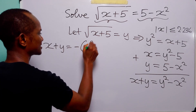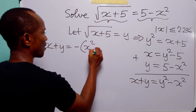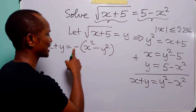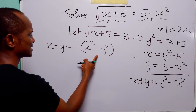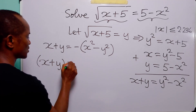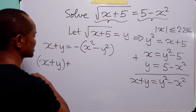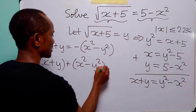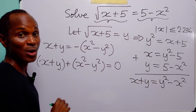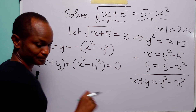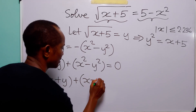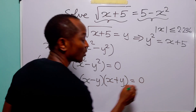We can rewrite this as x + y = -(x² - y²). Bringing the right-hand side over, we get x + y + x² - y² = 0. We immediately recognize the difference of two squares, so this becomes x + y + (x + y)(x - y) = 0.